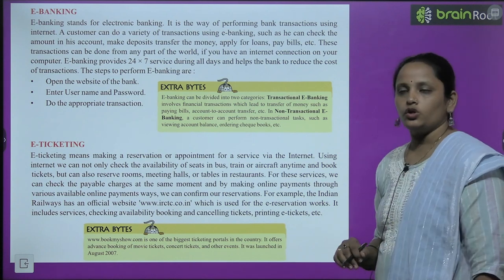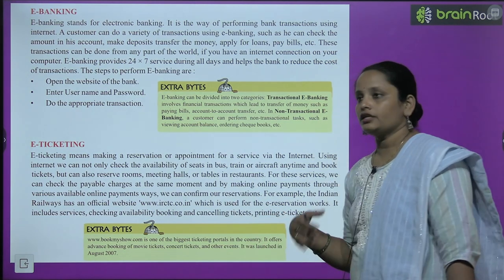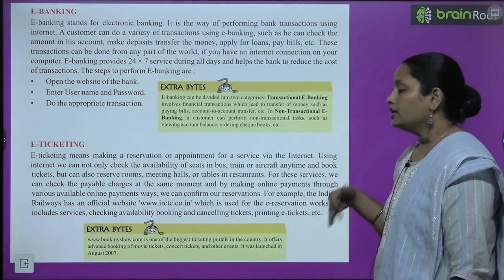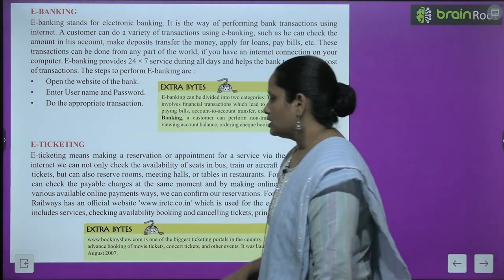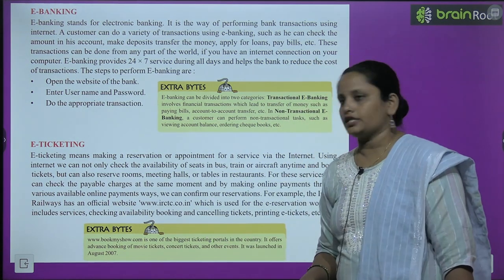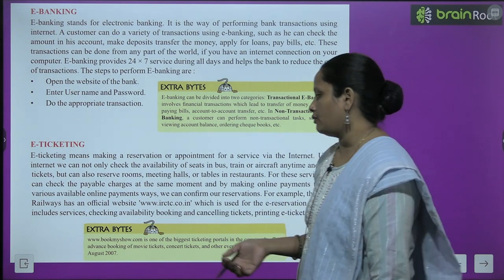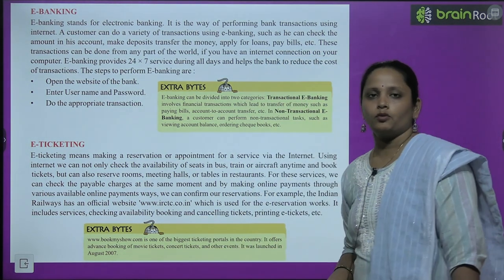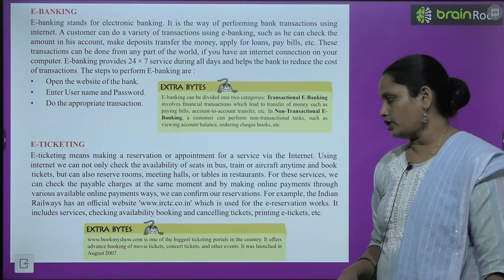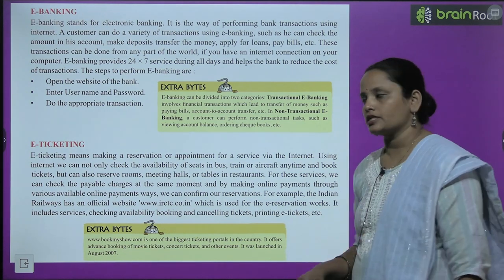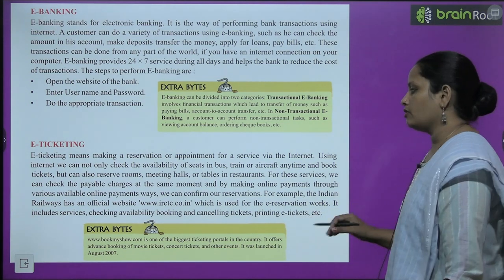On IRCTC you can check train seat availability, cancel tickets, and print e-tickets. Another popular ticketing portal is www.bookmyshow.com — one of the biggest in the country — where you can book advance movie seats, concert tickets, and other events. It was launched in August 2007.